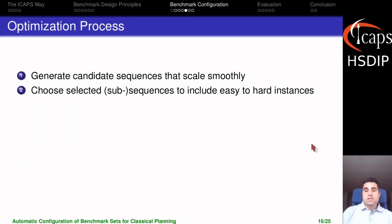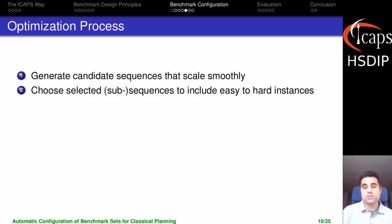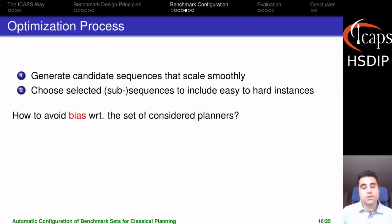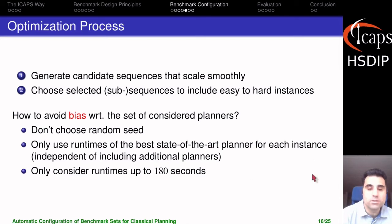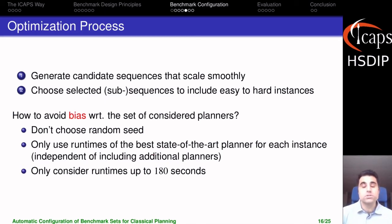In order to construct a benchmark from this, we do two steps. The first step generates candidate sequences that scale smoothly. The second step selects a set of subsequences to ensure the final benchmark set satisfies all our constraints. We aim to avoid bias by not choosing concrete random seeds at any point — we always use different random seeds — and by not taking into account the runtime of every planner considered during the optimization, but only the runtime of the best planner per instance. This means our system will be robust with respect to including additional planners that perform worse in that domain.